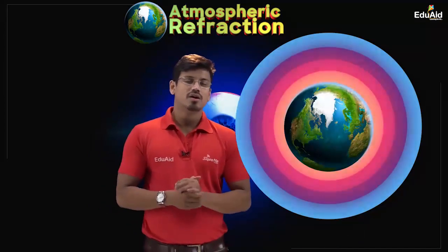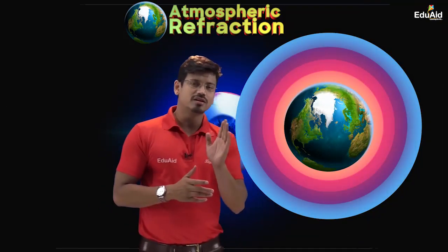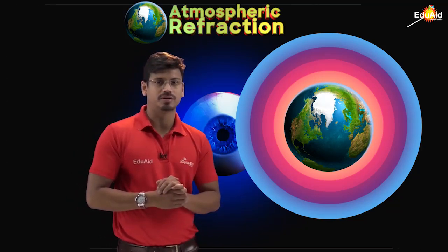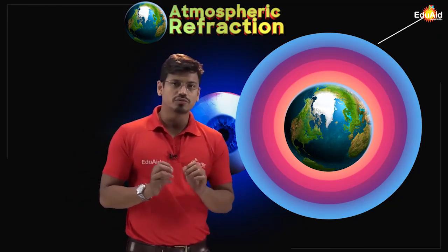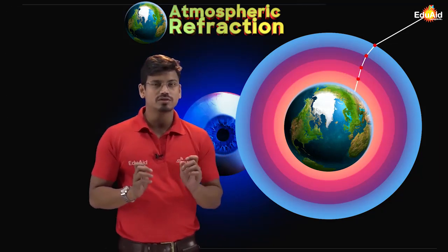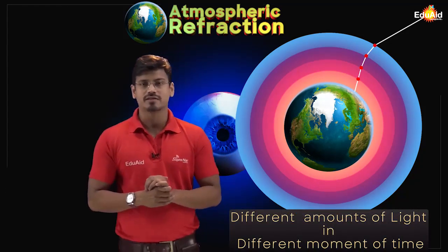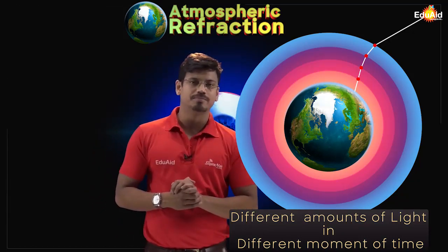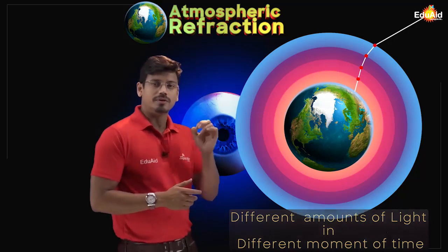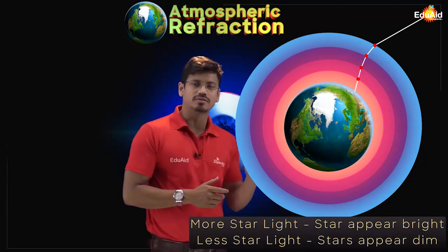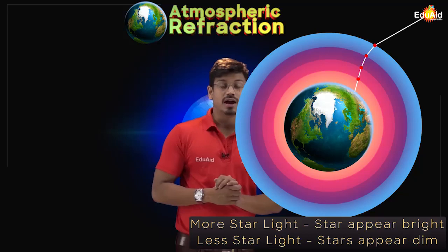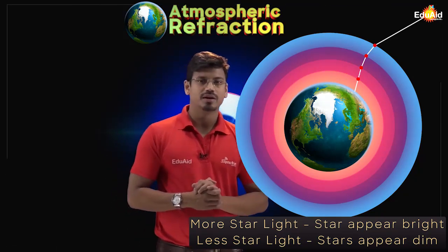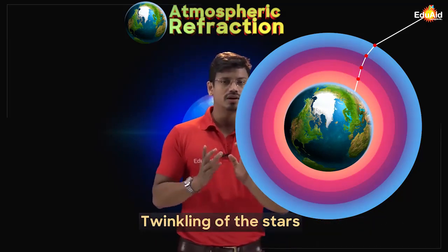When light from a star enters the earth's atmosphere, it undergoes refraction from the various layers. The earth's atmosphere is continuously changing, and this continuously changing atmosphere refracts starlight at different amounts at different moments. If the atmosphere refracts more starlight towards us, the star appears brighter. If it refracts less starlight towards us, the star appears dim. This combined process is called the twinkling of the stars.